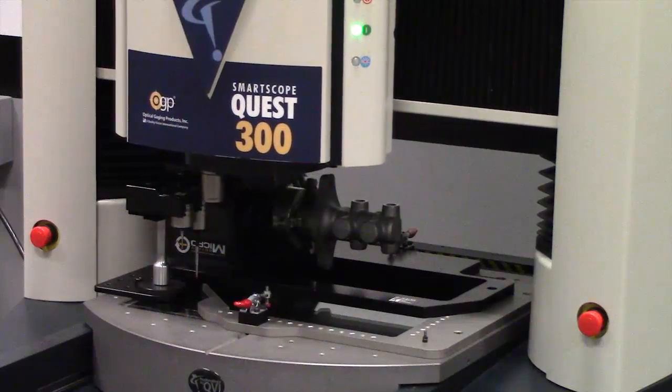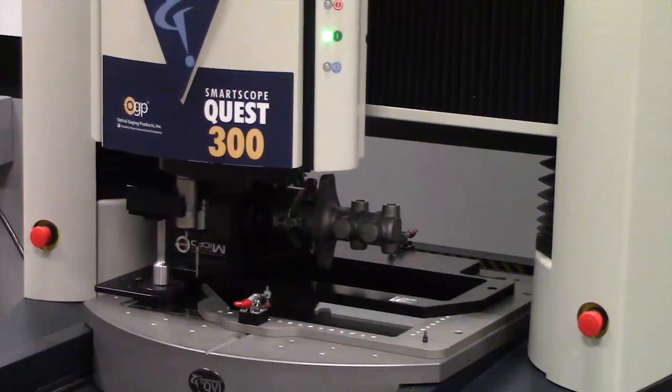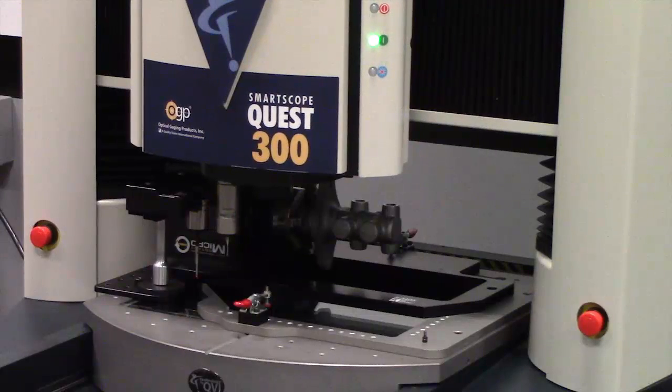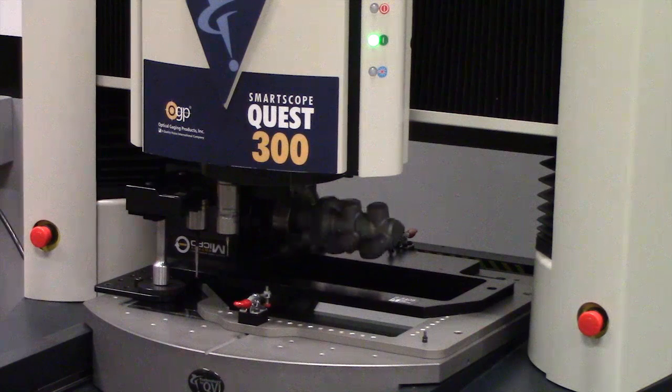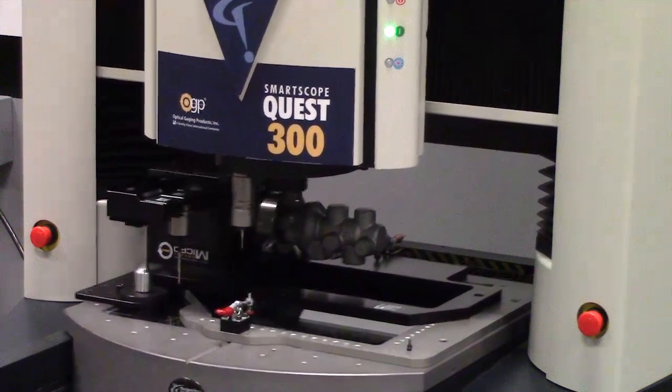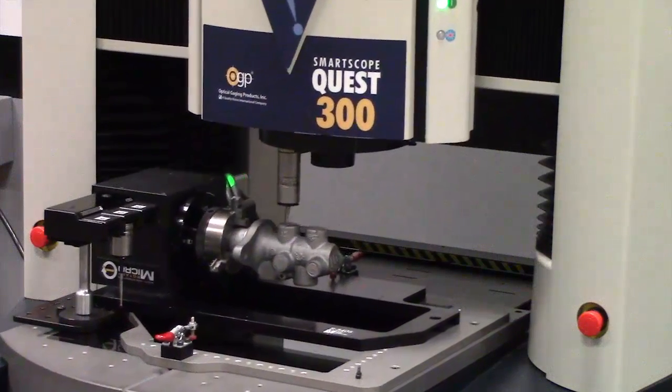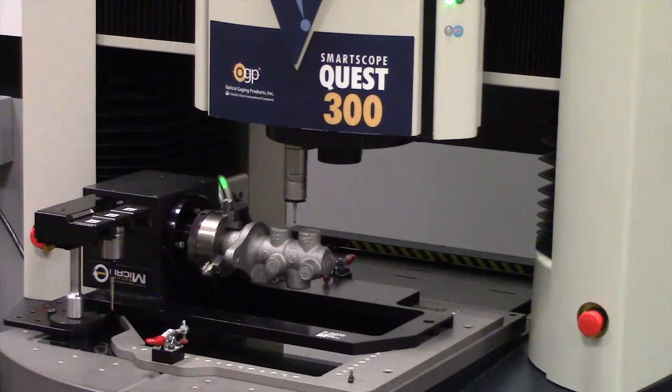It is shown here equipped with OGP's micro theta rotary to allow fourth axis measurements. A secondary rotary may be added to allow for fifth axis measurements as well.